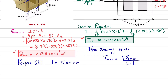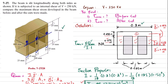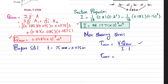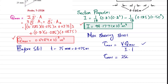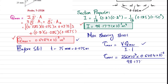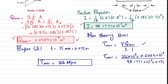Before the slit: τ_max = (250 × 10³ × 0.6484 × 10⁻³) / (98.1771 × 10⁻⁶ × 0.075). Solving this gives maximum shearing stress before cut = 22 MPa.